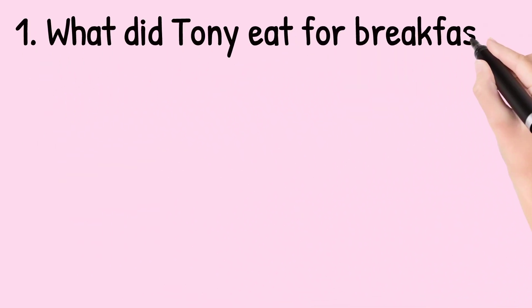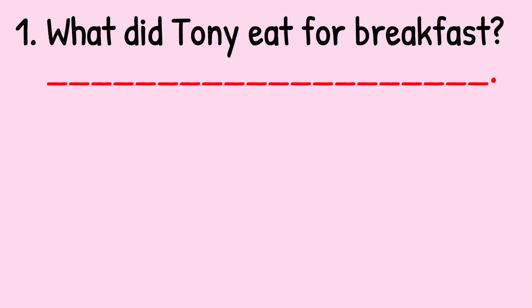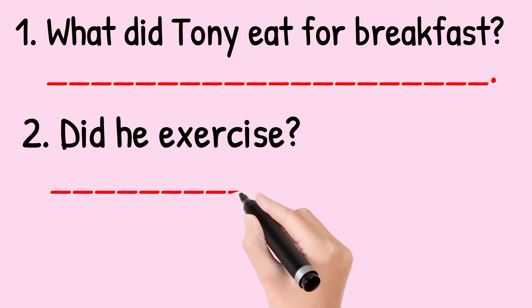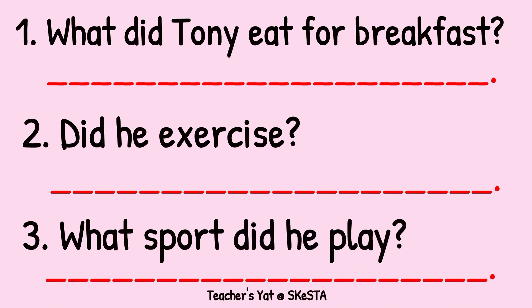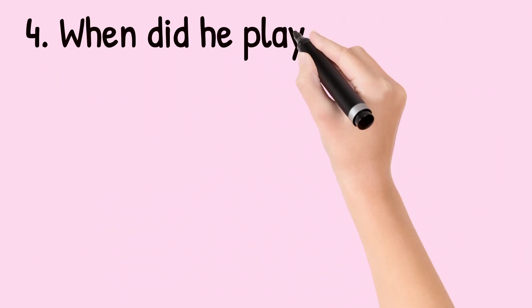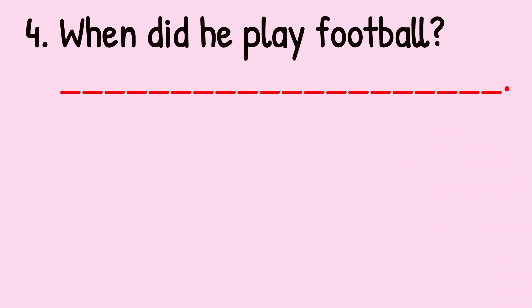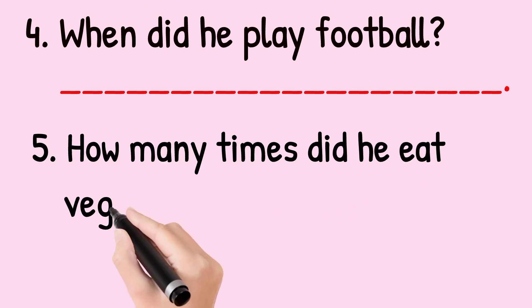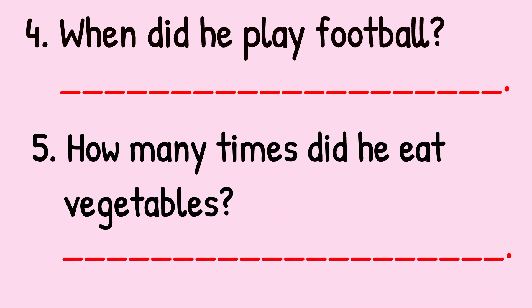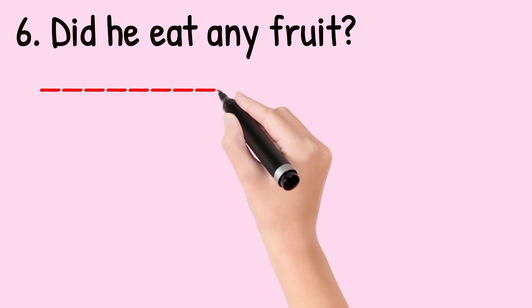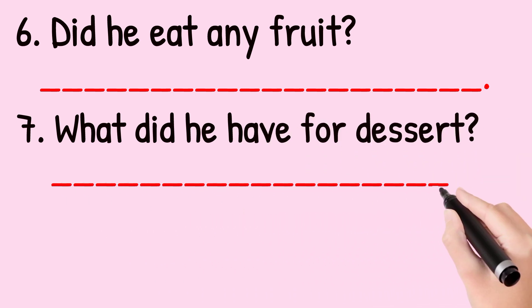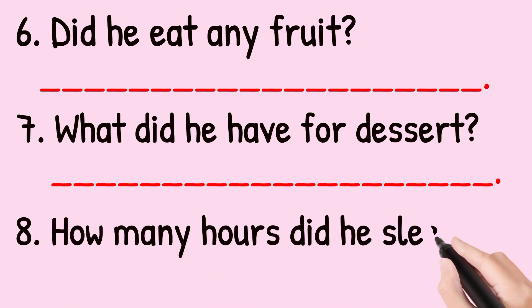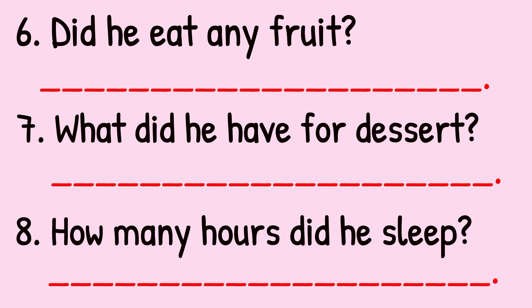Question number one: What did Tony eat for breakfast? Question number two: Did he exercise? Question number three: What sport did he play? Question number four: When did he play football? Question number five: How many times did he eat vegetables? Question number six: Did he eat any fruit? Question number seven: What did he have for dessert? And the last question: How many hours did he sleep? That's all. Bye.